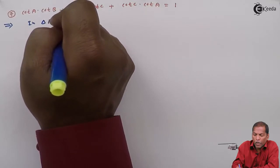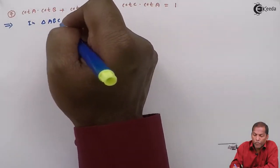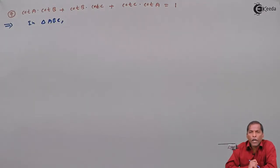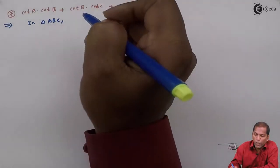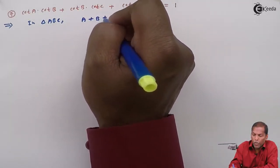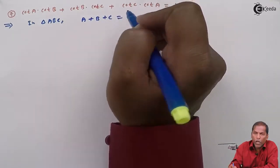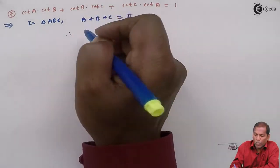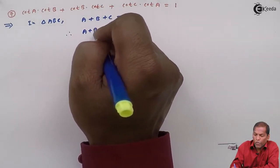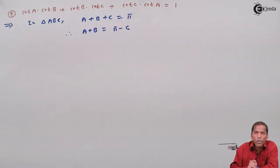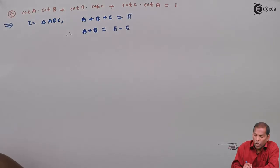In triangle ABC, the sum of all angles of a triangle is equal to 180 degrees. Therefore, A plus B plus C is equal to π. Therefore, A plus B is equal to π minus C.